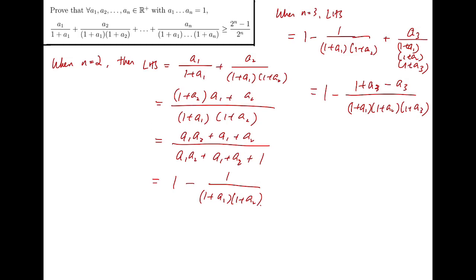Note that because I am combining the two fractions, I actually have this sign to be minus instead of plus. After simplifying, again, I get another expression very similar to the case when n is 2, in that, again, it's 1 minus some fraction with 1 as the numerator.